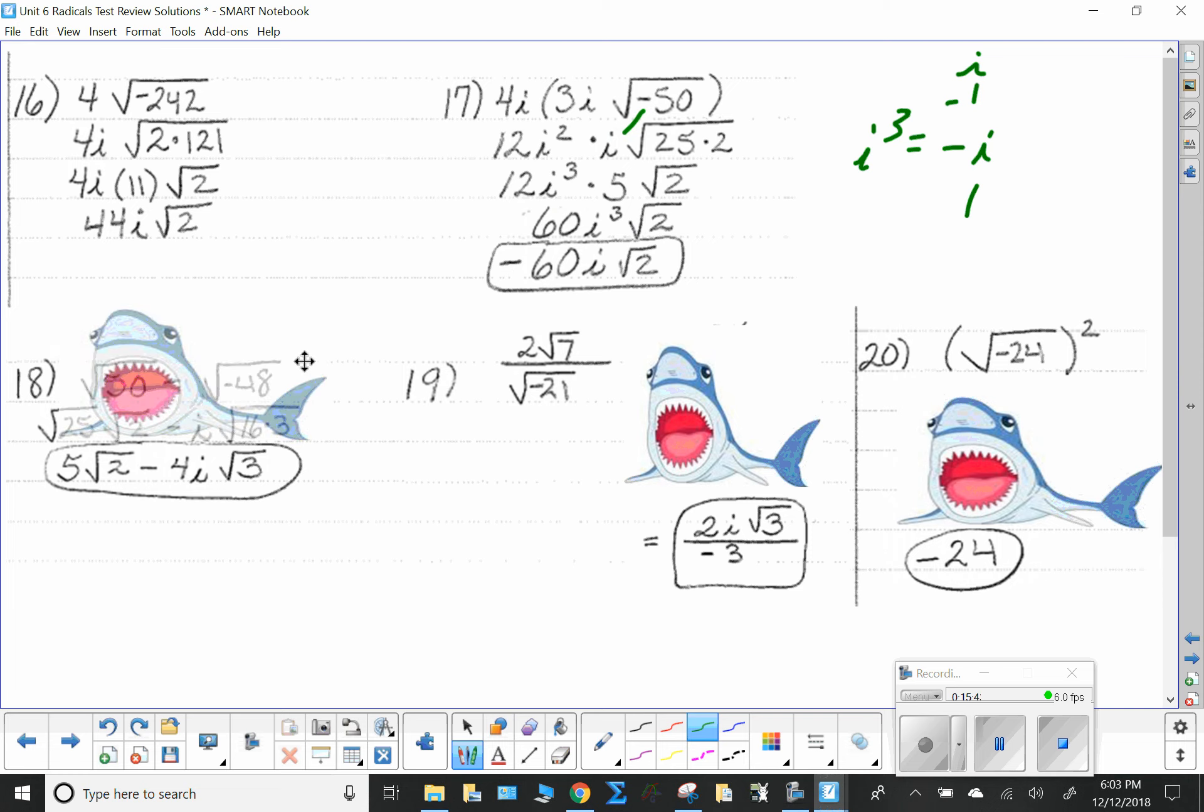Number 18. Root 50 minus root 48. Same deal. Got different radicals. Can't combine them, but I'm going to simplify them. And, if once I simplify them, they're alike, I'll combine them. If not, they're going to stay separate. Square root of 50 becomes 5 root 2. Square root of negative 48. Don't forget to take the i out. That always comes out first. That leaves me with 16 times 3 under the radical. Square root of 16 is 4. I now have 5 root 2 minus 4i root 3. It is a complex number with radicals. But, that's all you can do.